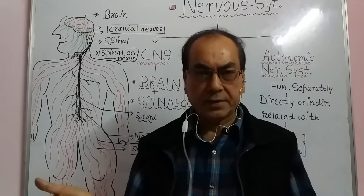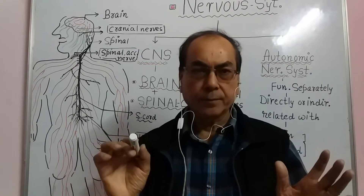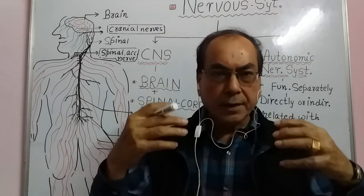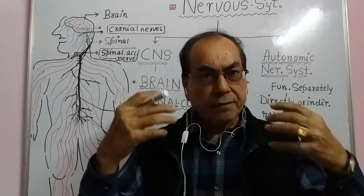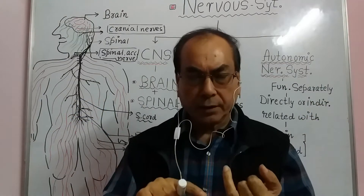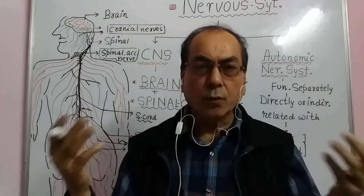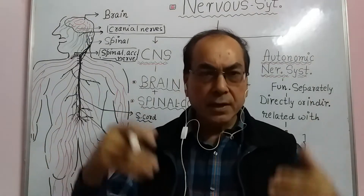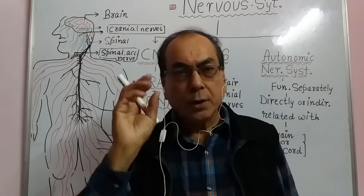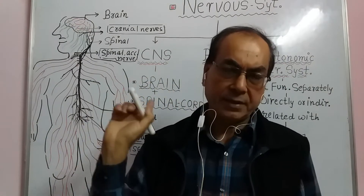What is this nervous system? The nervous system is that system which is related with giving different sensations in our body like hotness, coldness, pain, the sense of vision, the sense of hearing, taste, as well as controlling all the muscles in our body.